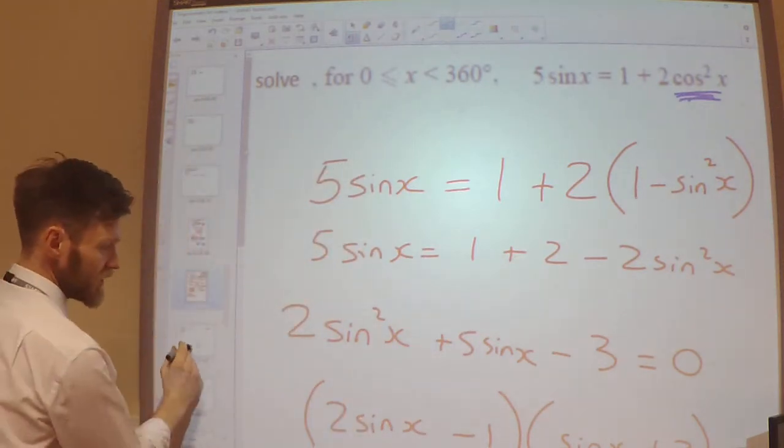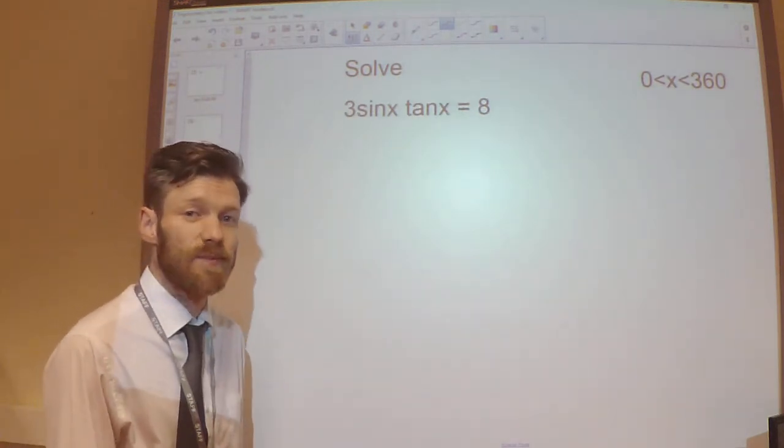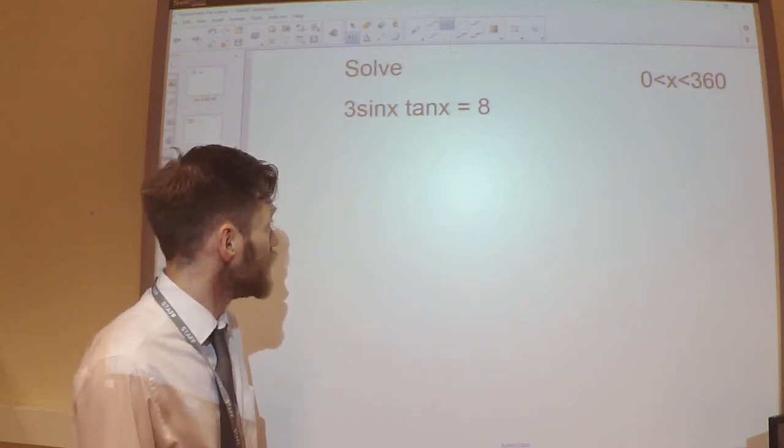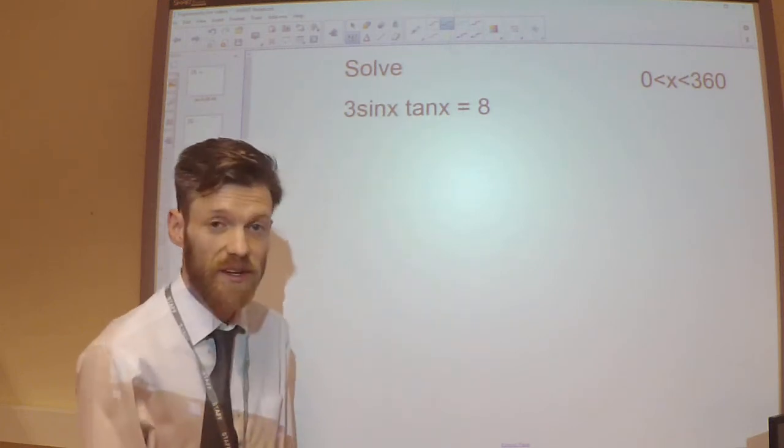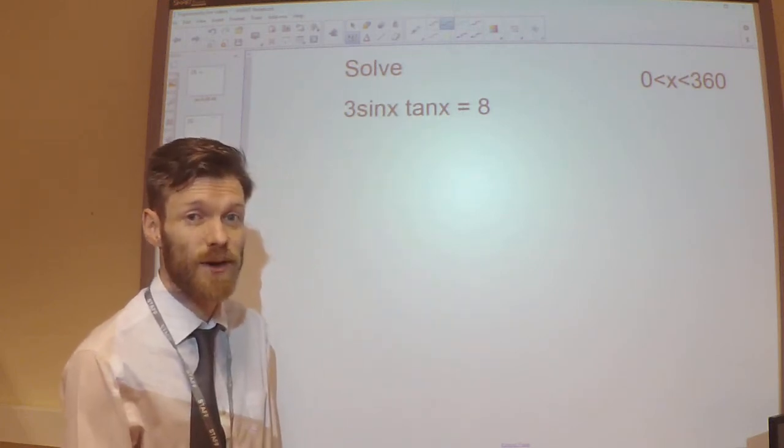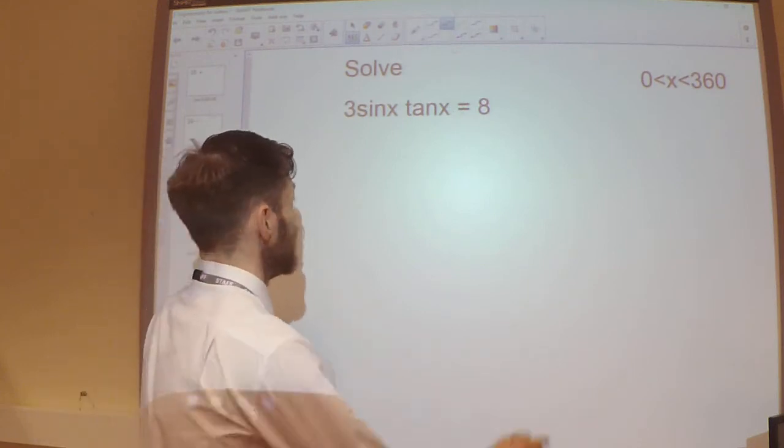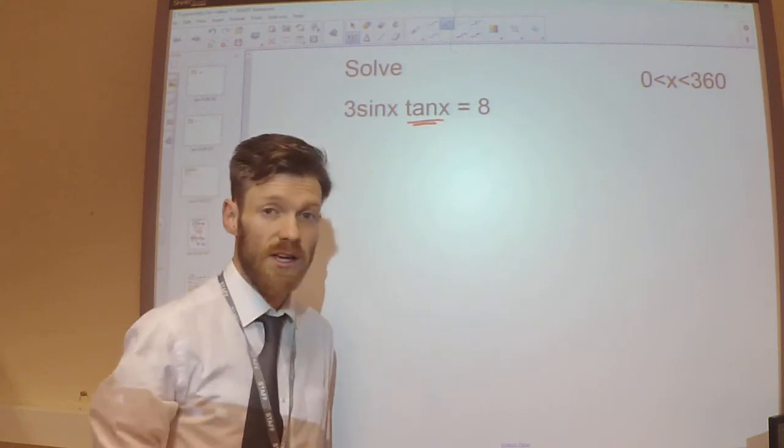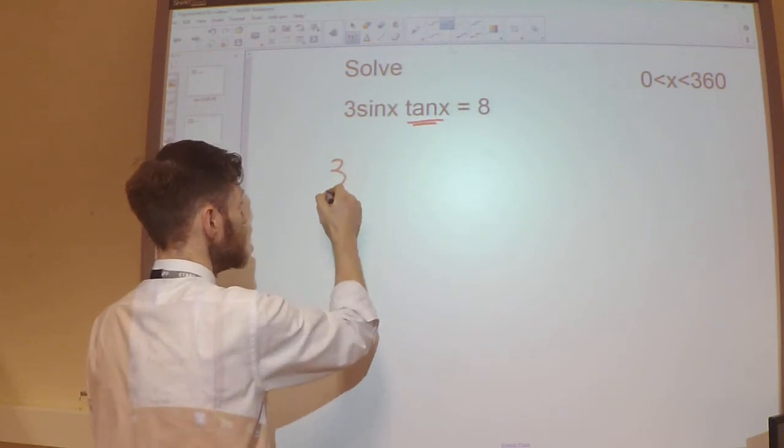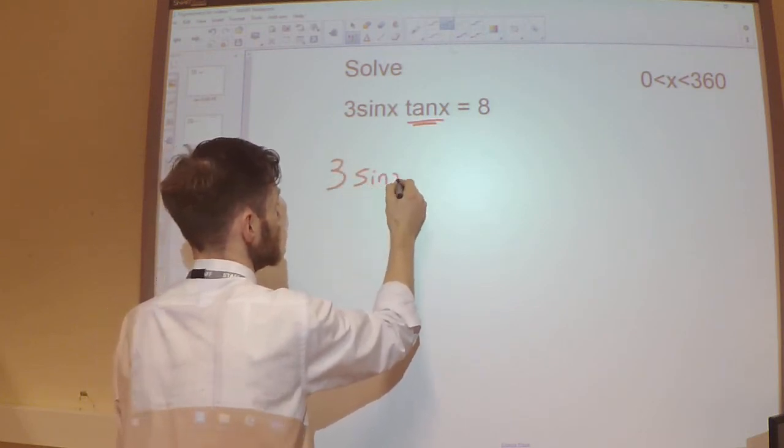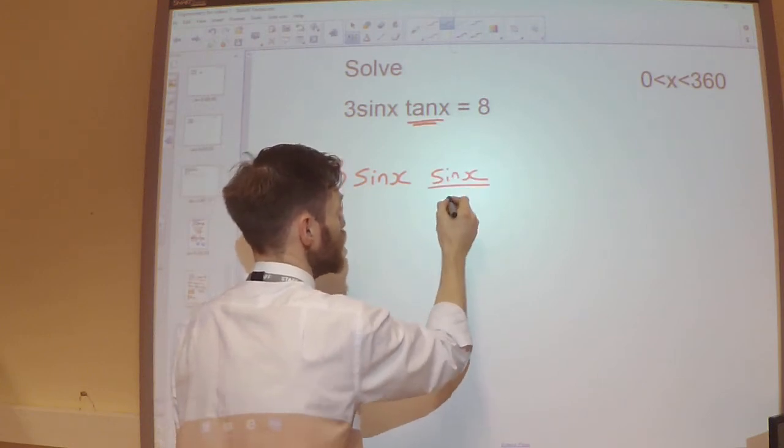Last example I'm going to do in this video is this one. We've got 3 sin x multiplied by tan x is equal to 8. Again, the reason why this is in this video is we've got two trigonometric functions that I'm somehow going to need to combine together so I can solve them. Now, tan x, I know, is sine x over cos x. So instead of writing tan x there, I can write sine x over cos x.